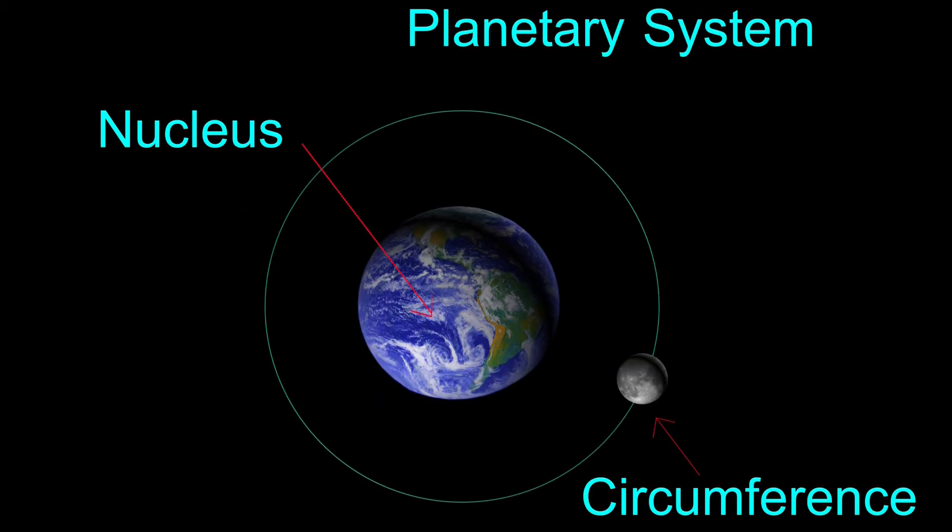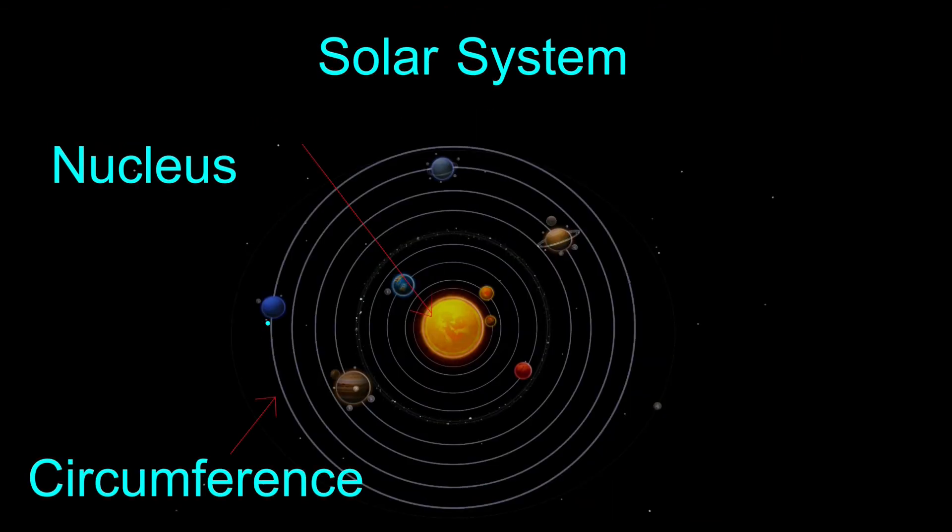When we look at the entire Earth, we can see the same basic concept. The Earth is the nucleus and the moon rotates around the Earth, forming a circumference. If we zoom out even further, we see that in the solar system, the sun is the nucleus and planets all orbit around the sun, forming a circumference.